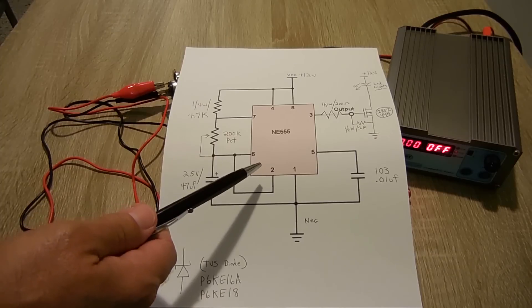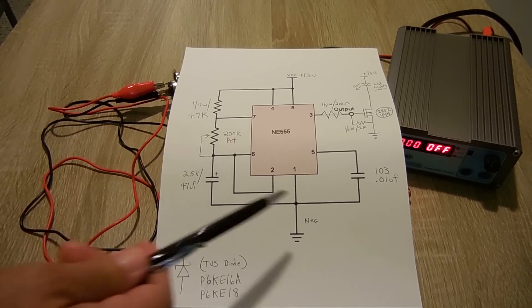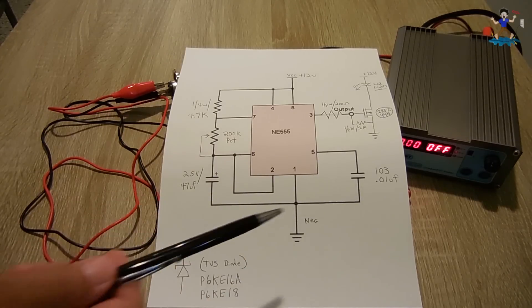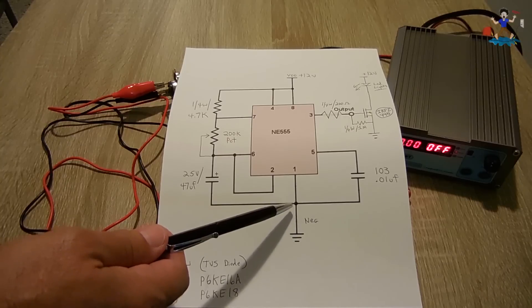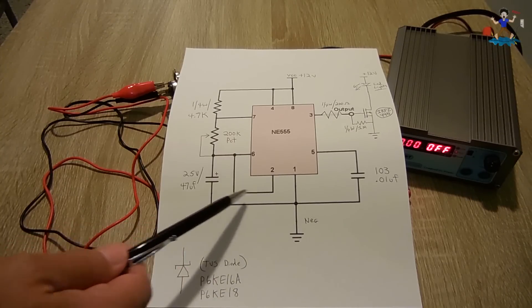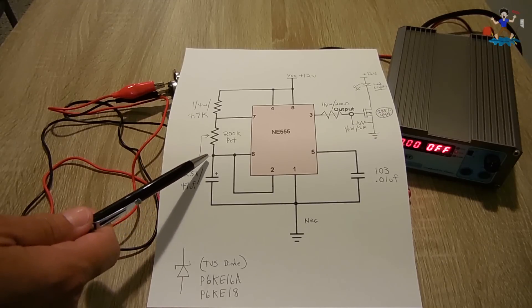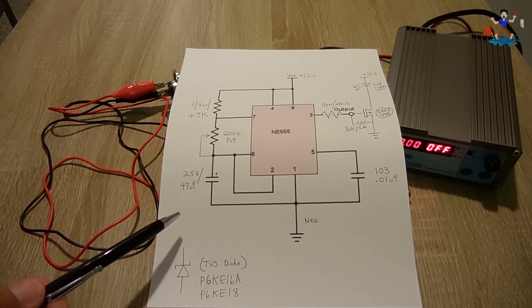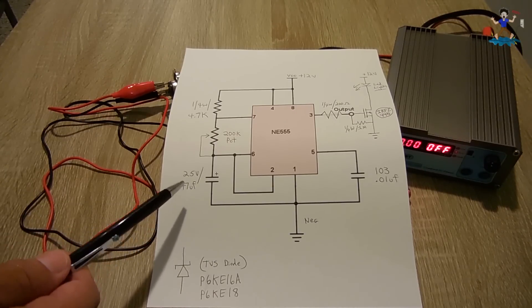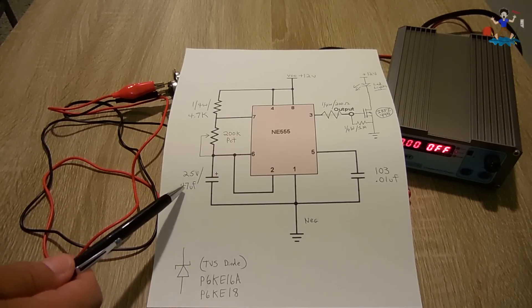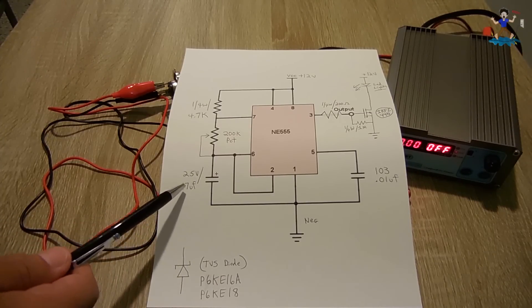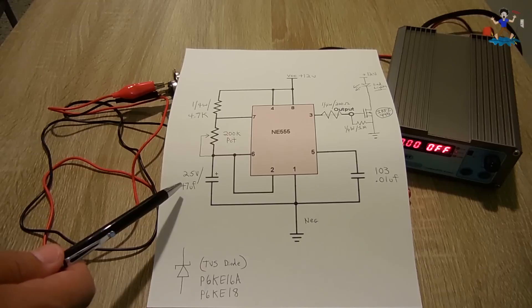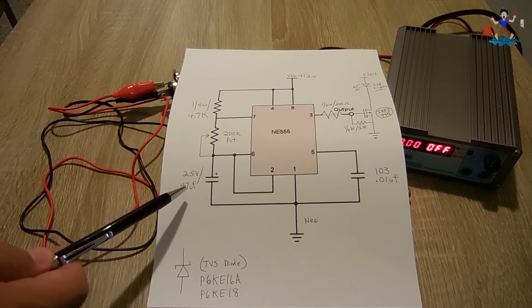Here you see the 555 timer, the usual astable setup. You have a 103 capacitor, 0.01 microfarad going between pin 1 and pin 5. Pin 1 goes to ground. Number 2 is connected with pin 6. Then you have between pin 6 and ground a 25 volt 47 microfarad electrolytic capacitor and the delay of this circuit can be adjusted by either raising this value or lowering the value. If you'd like a shorter cycling, then you would lower the value. If you'd like it to cycle on and off at much longer intervals, then you would increase this value.